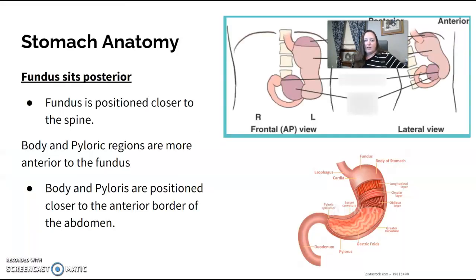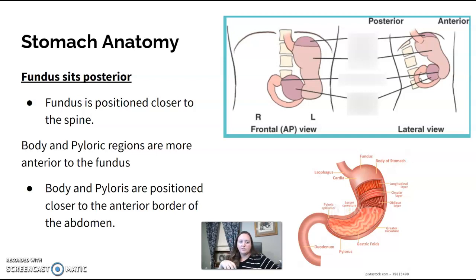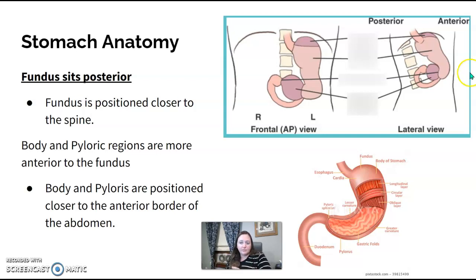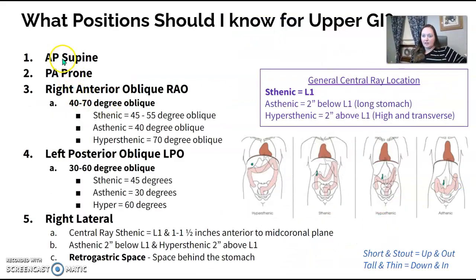Your upper GI is focused on the stomach. The fundus is really the indicator of patient position — what's in the fundus is most helpful. The fundus sits posteriorly to the body, so the fundus is kicked back while the body is forward. If your patient is laying supine, the fundus will be closer to the spine than the body. When we're talking about barium and air, that's important to understand.